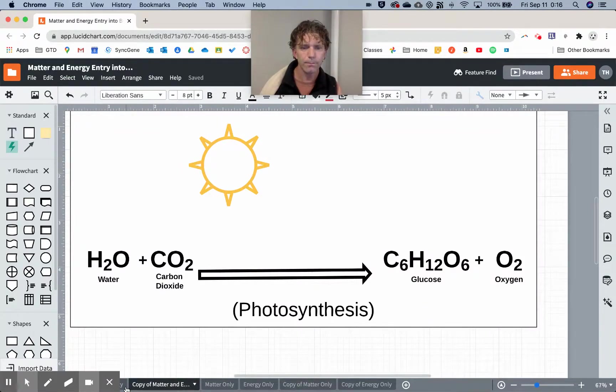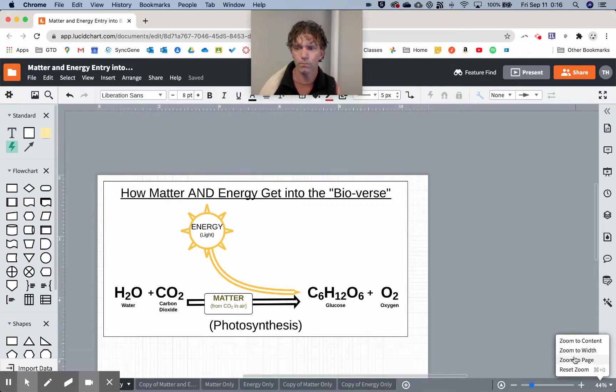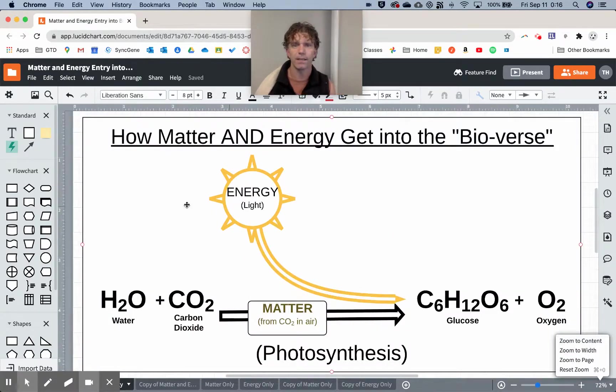If we think about how matter and energy get into the living, basically it's through photosynthesis. Matter turns into us. Originally, in terms of getting into life, from the carbon dioxide in the air, the process of photosynthesis takes this matter - a little bit of this matter but mostly the carbon-based matter - and turns it into glucose.